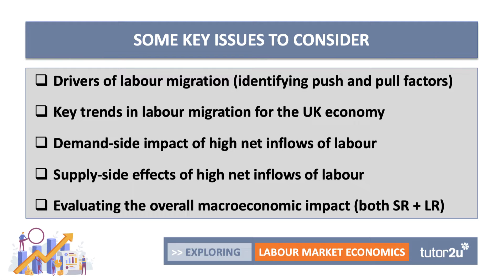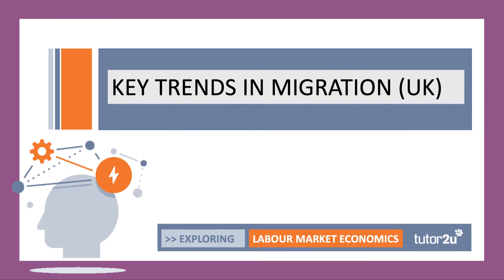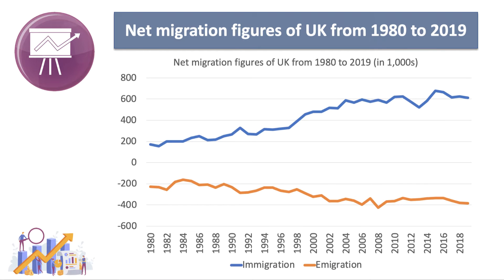We'll also do a special video thinking about the costs and benefits of migration, evaluating the overall macroeconomic impact both in the short run and the long-term performance of a country. In this first video we're going to take a look at the data on key trends in migration for the UK. As this chart shows, over the last 40 years there has been a significant rise in both emigration — the orange line, people leaving the UK — and immigration, the blue line, people coming to the UK.